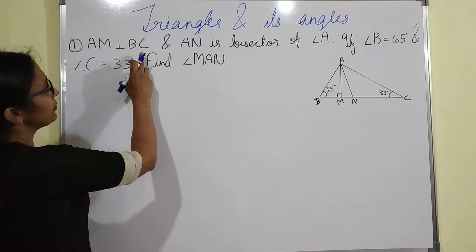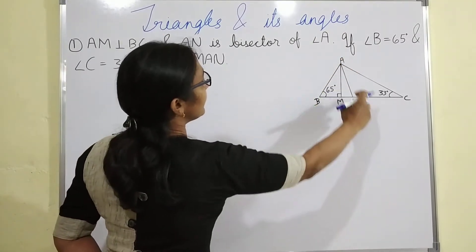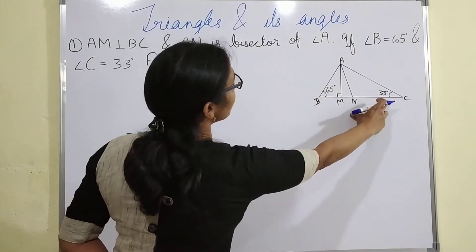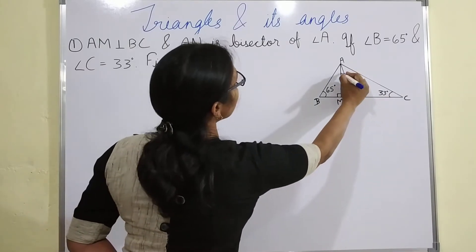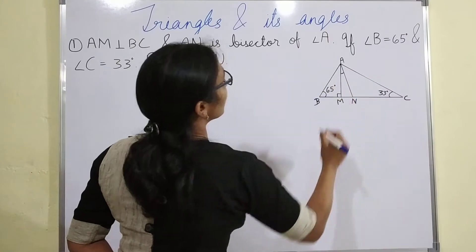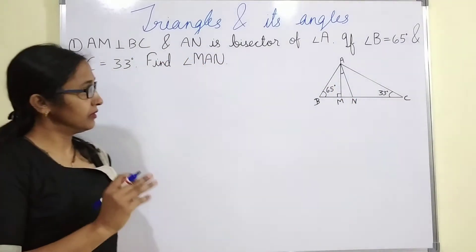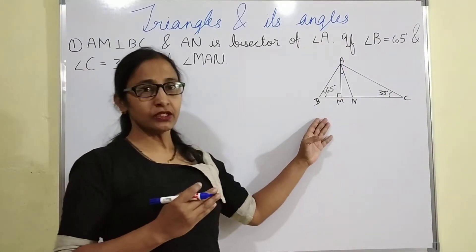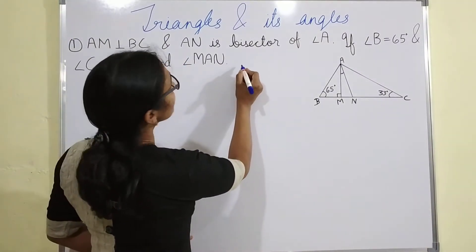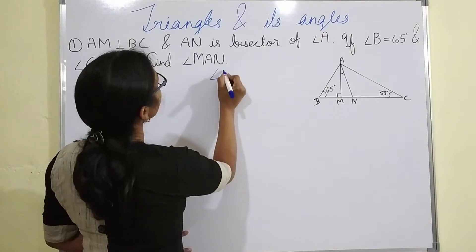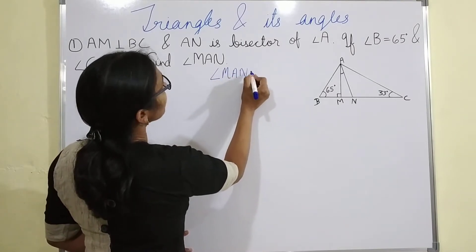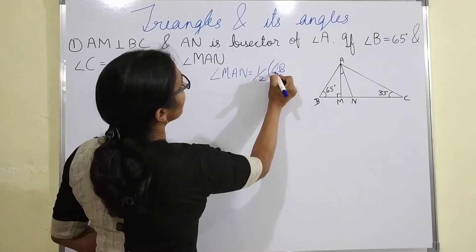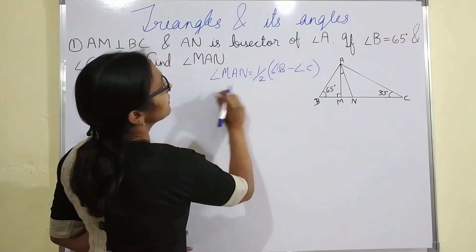AM is perpendicular on BC and AN is the bisector of angle A. If angle B equals 65 degrees and angle C equals 33 degrees, find angle MAN. This question may also come as a theorem. The theorem states that angle MAN equals half of angle B minus angle C.